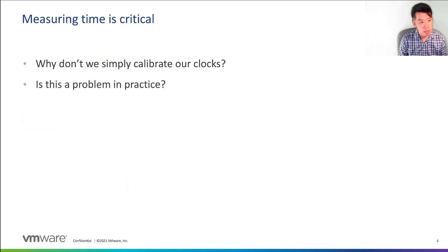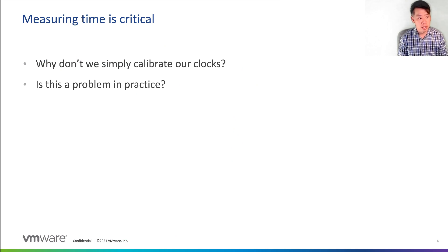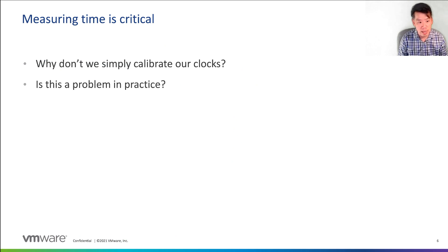Given that measuring time is so critical, you might be asking: why don't we simply calibrate our clocks, and is this actually a problem in practice? In this talk, I hope to convince you that it's not that easy, and that it's actually resulted in real experimental problems where results have been retracted.